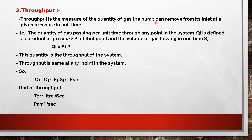The quantity of gas passing per unit time through any point in the system, Q_i, is defined as the product of the pressure p_i at that point and the volume of gas flowing per unit time S_i: Q_i = S_i × p_i. This quantity Q_i is known as the throughput of the system, and it is the same at any point: Q_i = Q_p = p_p × S_p.